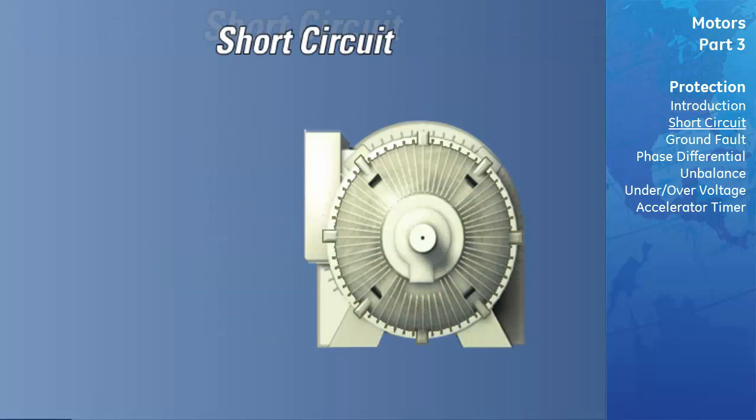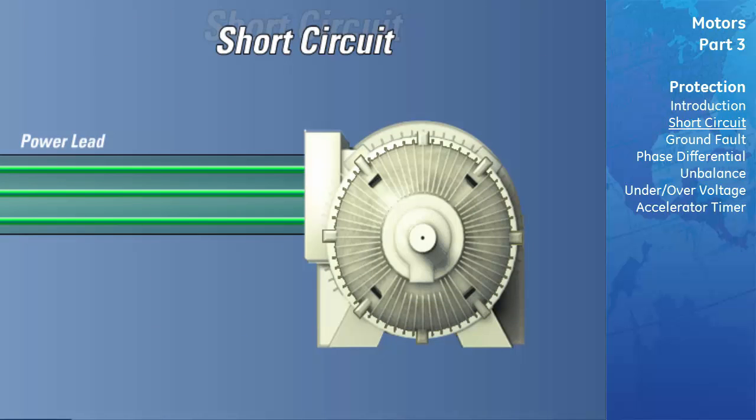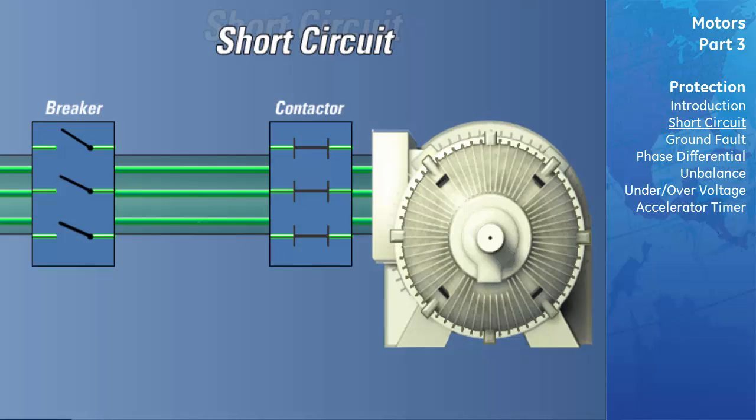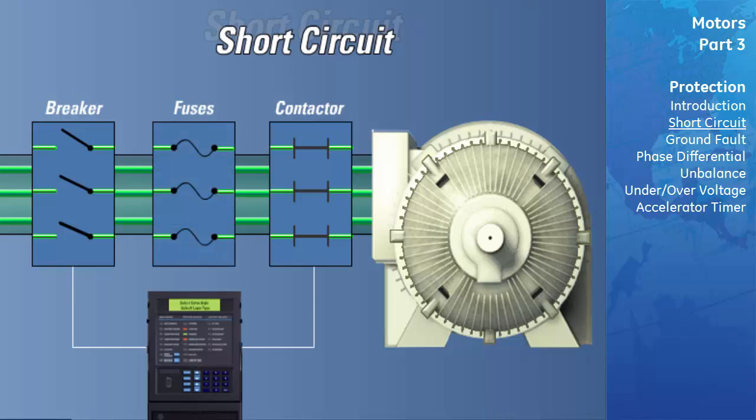Short circuit protection. The short circuit element provides protection for excessively high overcurrent faults. Phase-to-phase and phase-to-ground faults are common types of short circuits. The short circuit trip element is coordinated with external upstream fuses such that the element will operate first. When a motor starts, the starting current, which is typically six times the full load current rating of the motor, has asymmetrical components.